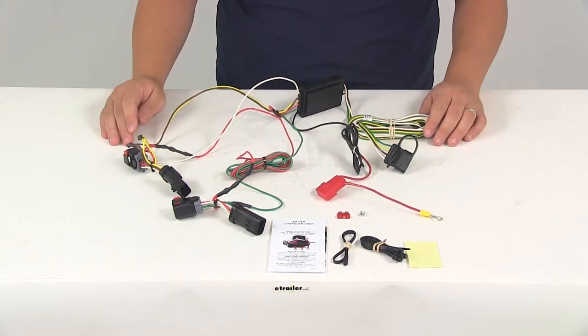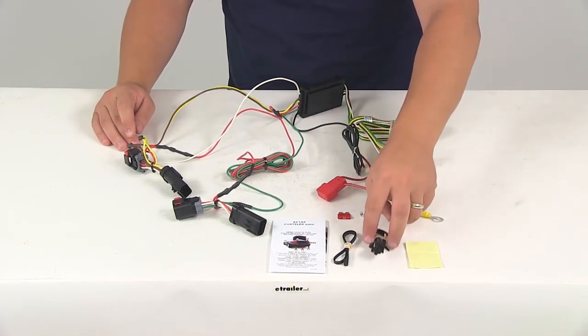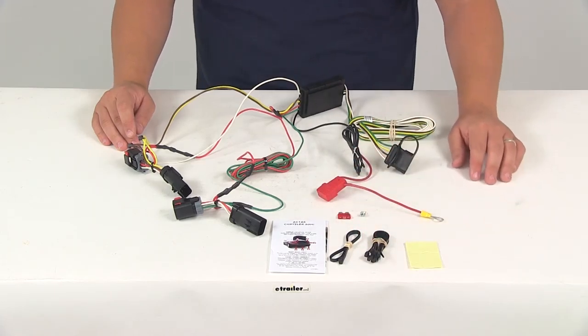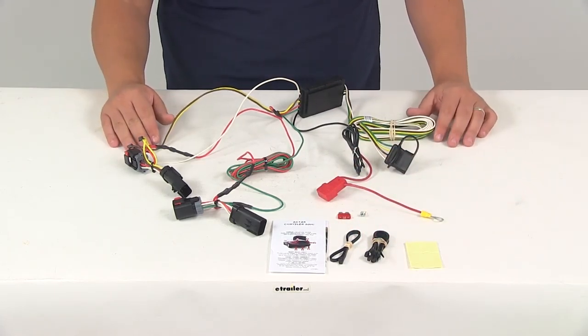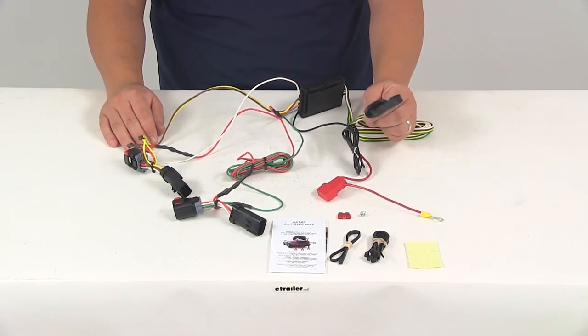The next step is going to be to go ahead and secure your wires up and out of the way. You can do that with the included zip ties. Secure the excess or any slack in your wiring and then once your installation is complete the four-way connector is going to be stowed in an out-of-the-way location within your rear cargo area.